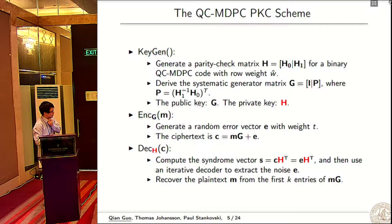The public key is a dense matrix and the private key is this sparse matrix. For encoding, we generate a random error vector E with weight t, and compute the ciphertext. For decoding, because we know the sparse matrix, we can build a Tanner graph and do iterative decoding to get the noise E, and we can get the plaintext from this if we know the noise.